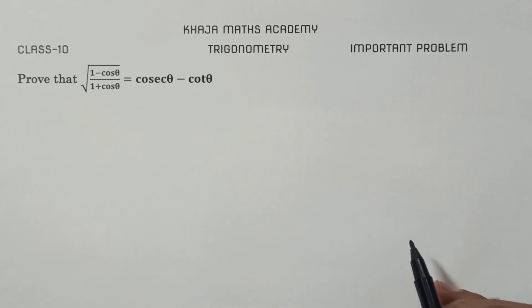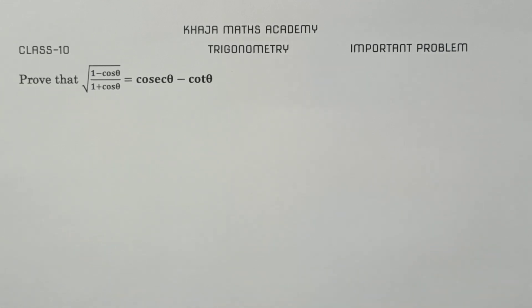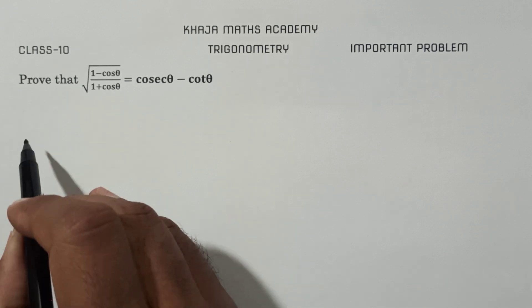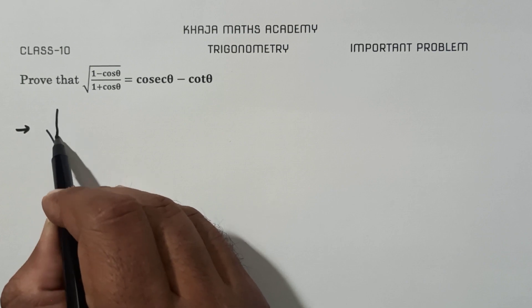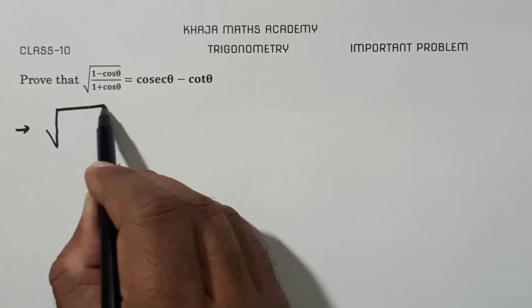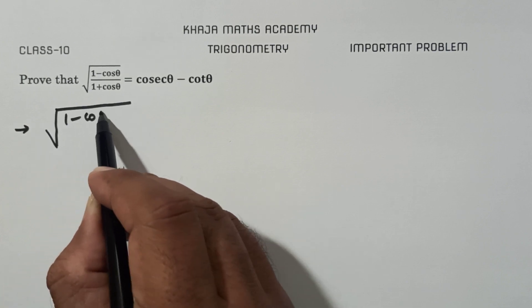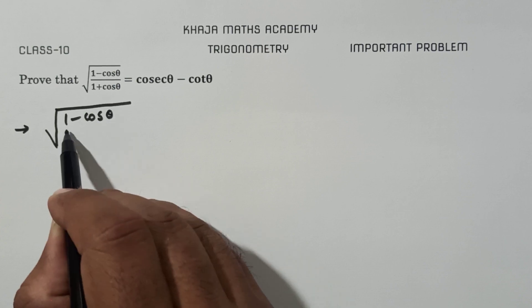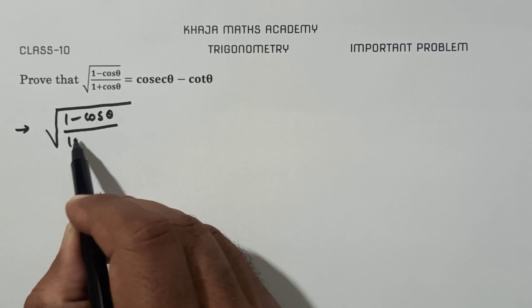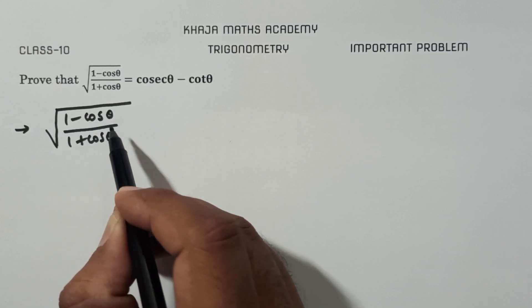Prove that √((1 - cosθ)/(1 + cosθ)) = cosecθ - cotθ. Take LHS: (1 - cosθ)/(1 + cosθ).